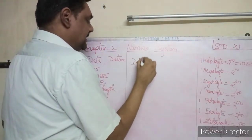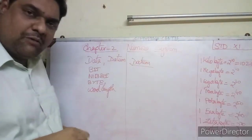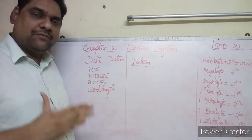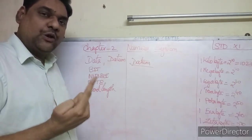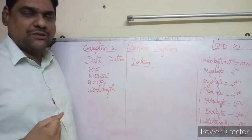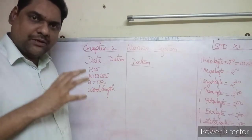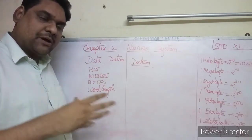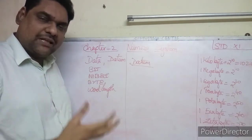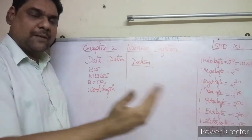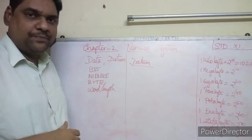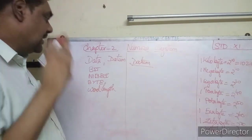Datum is the singular form — that is, one single value. Data is derived from datum: datum means a single value, data means many values. In computers, data is processed into meaningful information. Raw facts given to the computer are called data; what the computer gives back is called information. This is an important two-mark distinction.